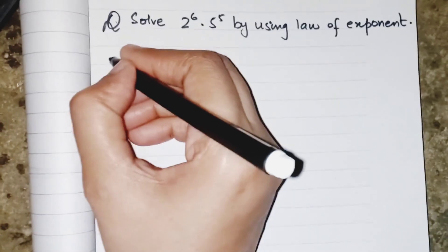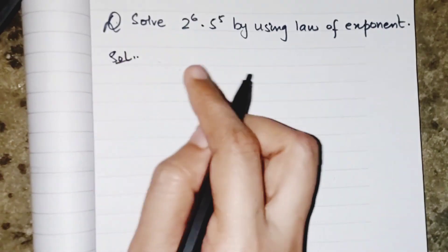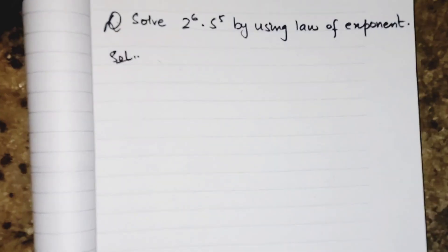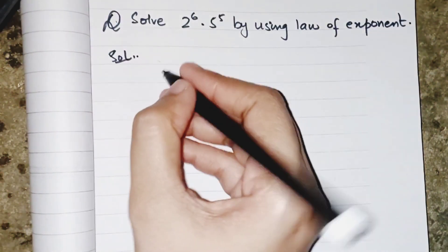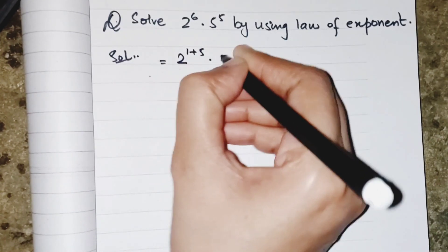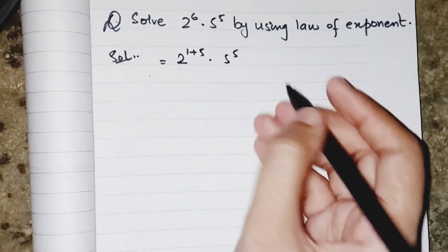So for making the same power, what can I do? I can break this 6 into 1 and 5. So I can simply write it as 2's power 1 plus 5, and 5's power is 5.